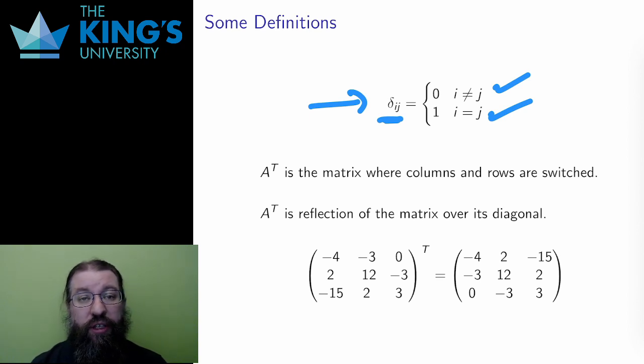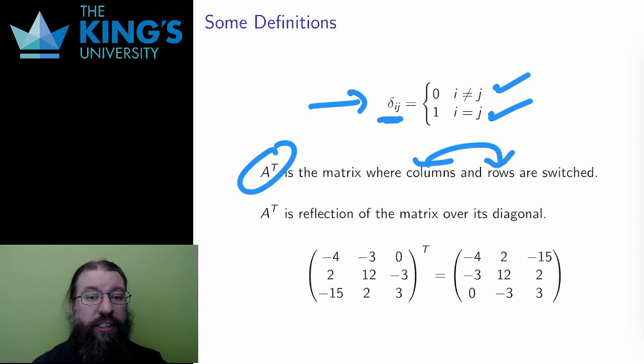I also need another definition here, the transpose of a matrix. If A is a matrix, then A superscript T is the transpose. It is the matrix with rows and columns switched. Equivalently, it is the reflection of the matrix over the diagonal. You can see this in the example.